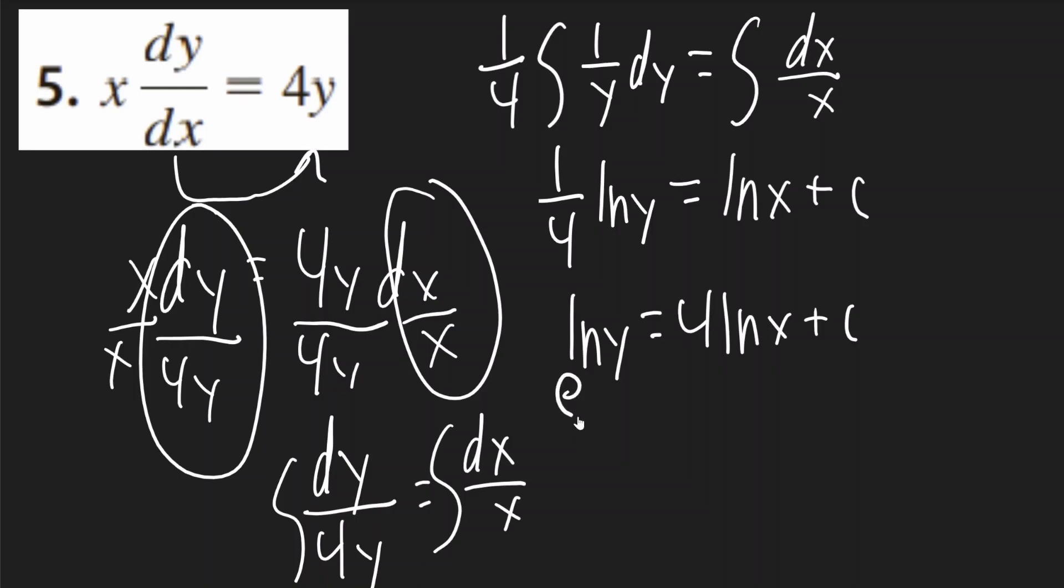Now you can take the exponential of both sides. So on the left, the e will cancel the ln. You'll get y. And on the right, you'll get e to the power of ln, and this will be x to the 4, because this 4 can be the exponent there, plus c.